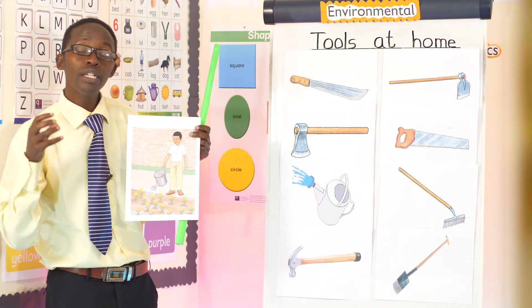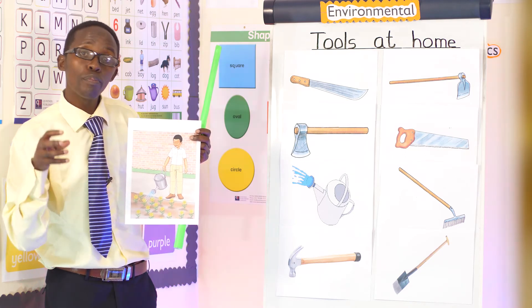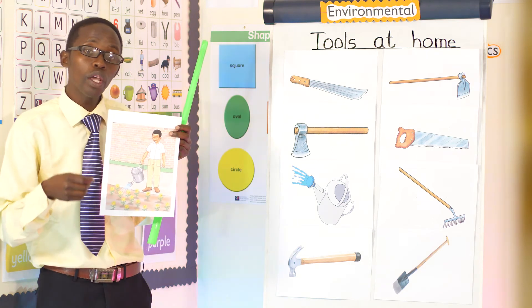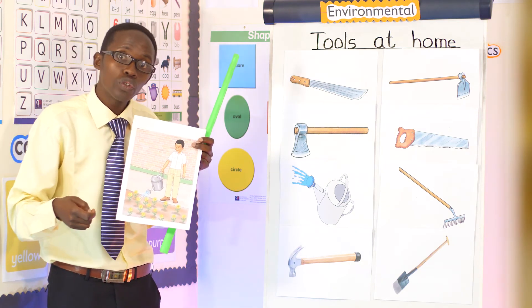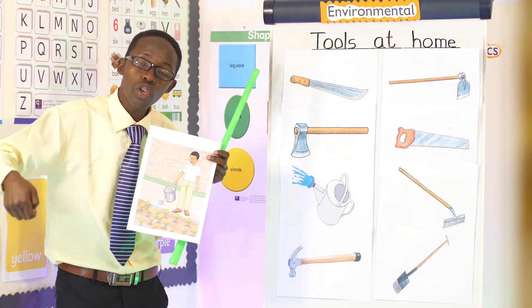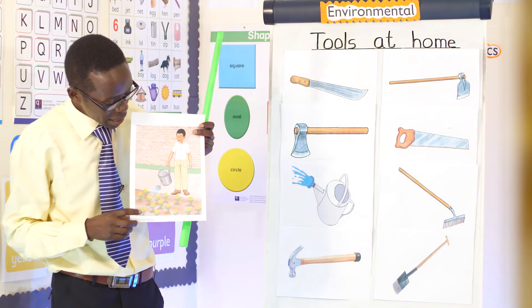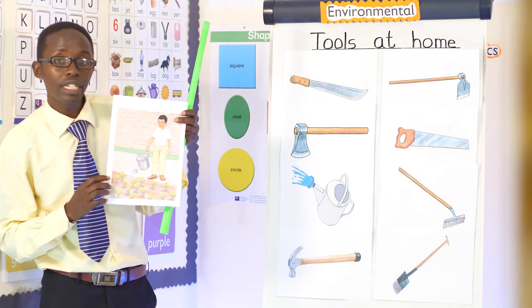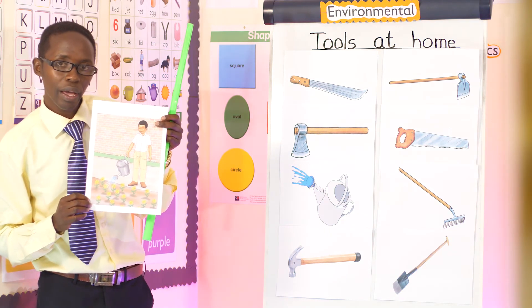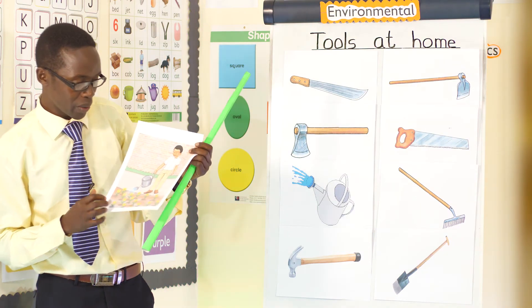So what do we do? We go to that tank where there is water and then we put water inside the watering can and then we go with it to a flower bed or in the farm and then we water our plants or flowers like this man is watering flowers. That is the work of watering can, we use it to water plants.